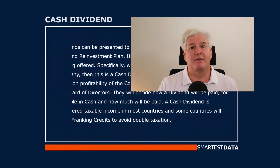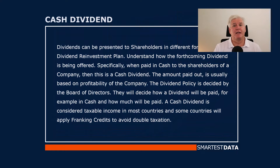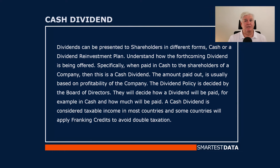Dividends can be presented to shareholders in different forms — cash or a dividend reinvestment plan. Specifically, when paid in cash to shareholders of the company, this is a cash dividend. The amount paid out is usually based on the profitability of the company. The dividend policy is decided by the board of directors, who will decide how a dividend will be paid and how much will be paid.